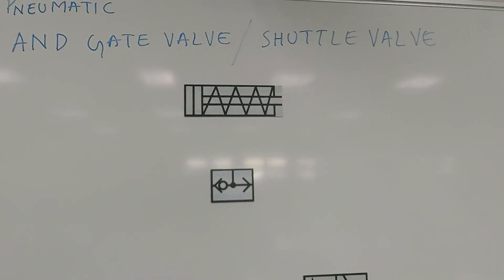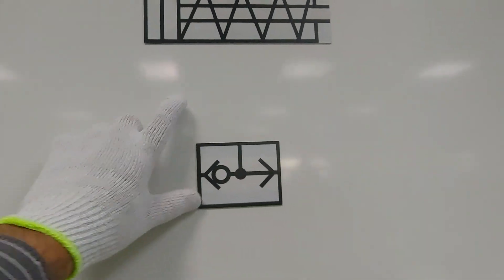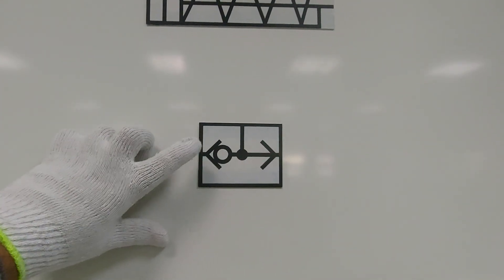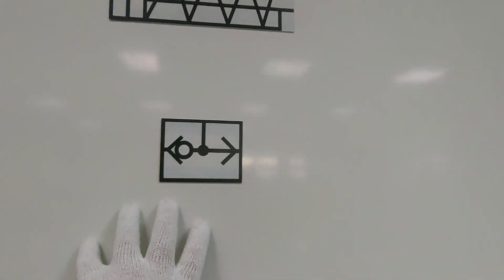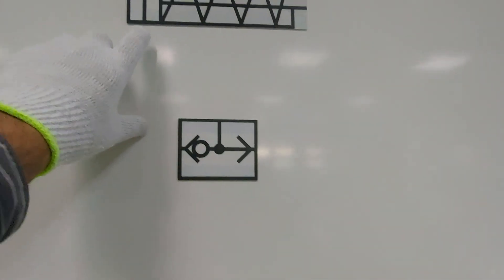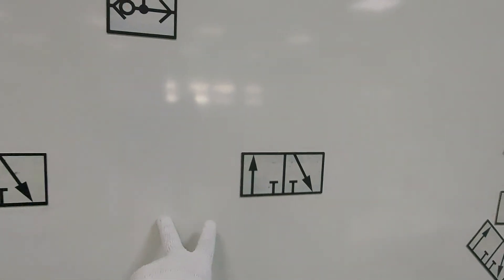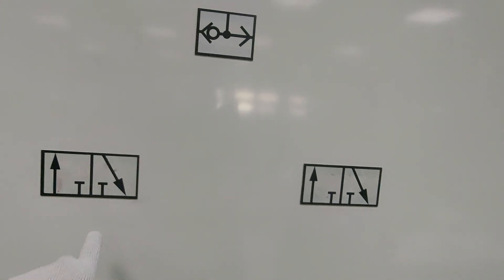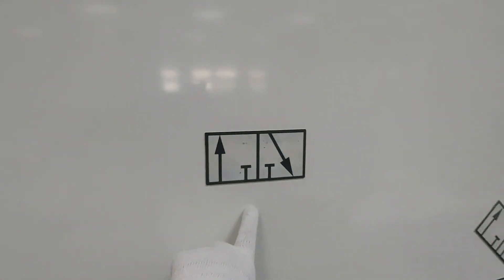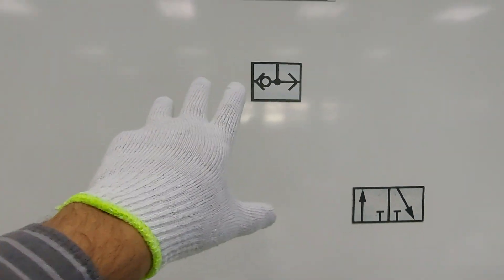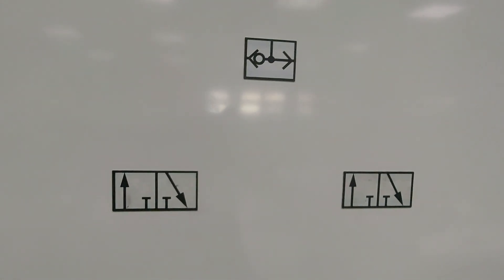Pneumatic AND gate valve, or shuttle valve. The ISO symbol for AND gate valve or shuttle valve looks like this. To connect it in a circuit we need a single acting cylinder, two valves, and direction control valves. We have used normally closed valves here. Now we will connect the circuit and then fix it on the circuit board.